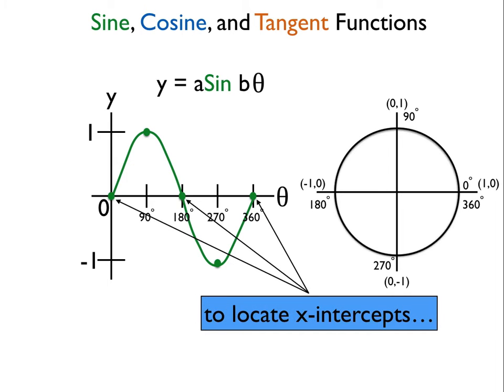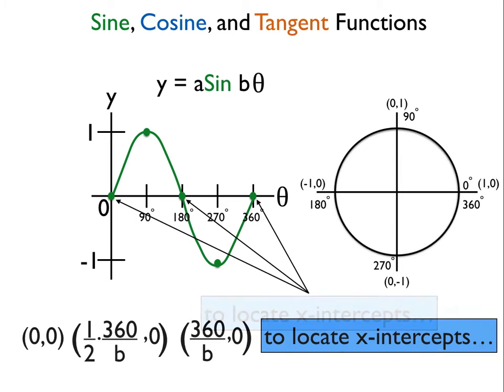Now to locate my x-intercepts, where this graph intersects the x-axis, I can use these three points. So my first point is always going to be (0, 0), because if you go back to the unit circle, at 0 degrees, sine always equals 0. So my first point will be at (0, 0). And then my other point, where it crosses the x-axis, is going to be 360 divided by 2 times b.